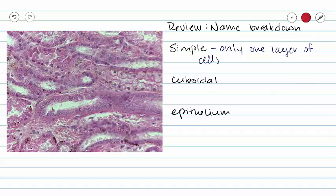So if we take a look at our picture here, we can see our simple cuboidal epithelium. Our simple cuboidal epithelium has only one layer of cells surrounding a given lumen. What does the word cuboidal mean?